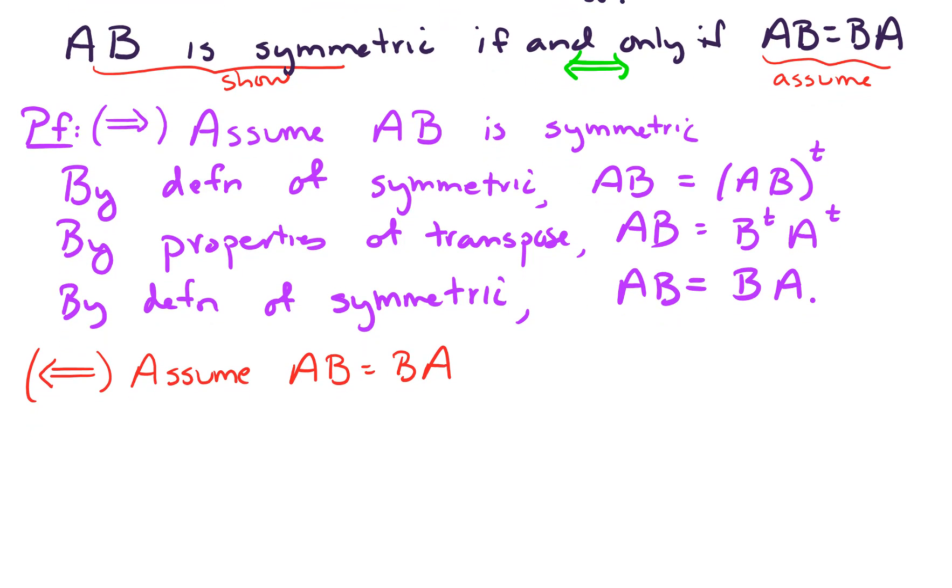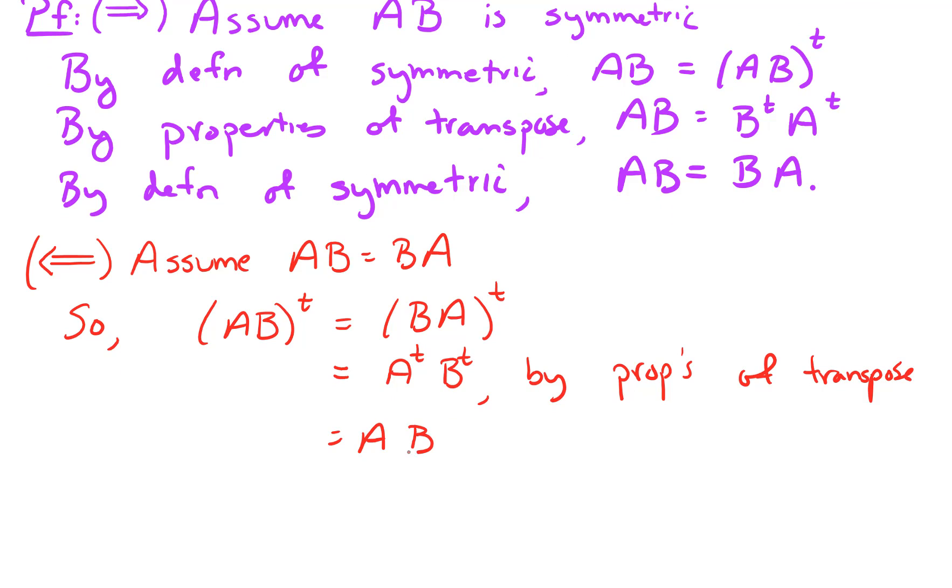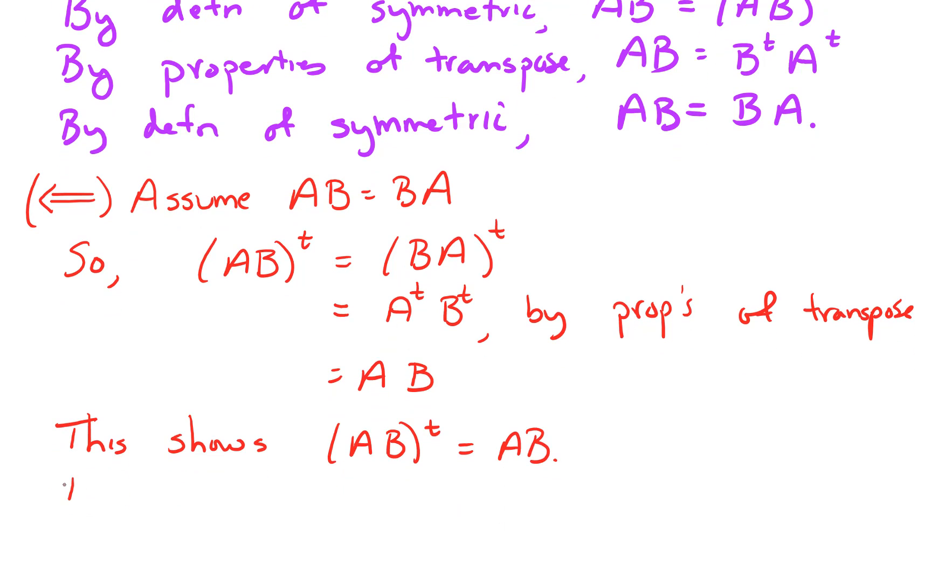So let's take a look at this. What this means is that AB transpose, if we just take the transpose on both sides, that means that that's equal to BA transpose. But by properties of the transpose, that means that this is equal to A transpose B transpose. And we're pretty much done. Once we get to this stage, we know that A transpose is the same as A, because A is symmetric and similarly for B. So this shows that AB transpose is the same as AB. And by definition, this shows that AB is symmetric.